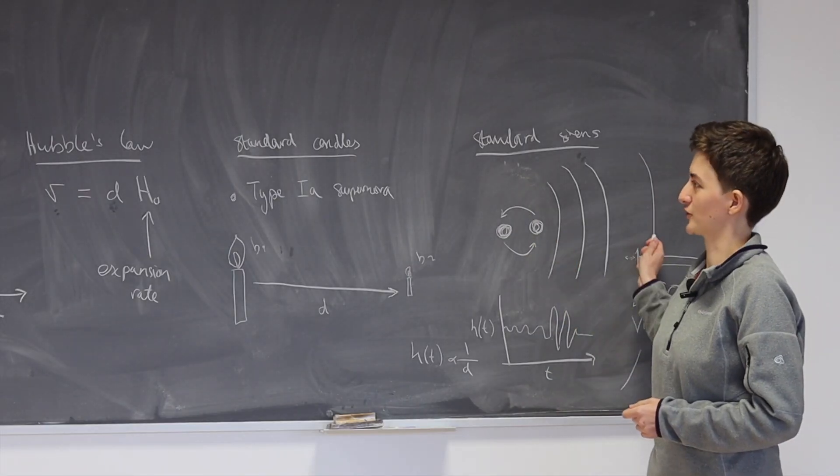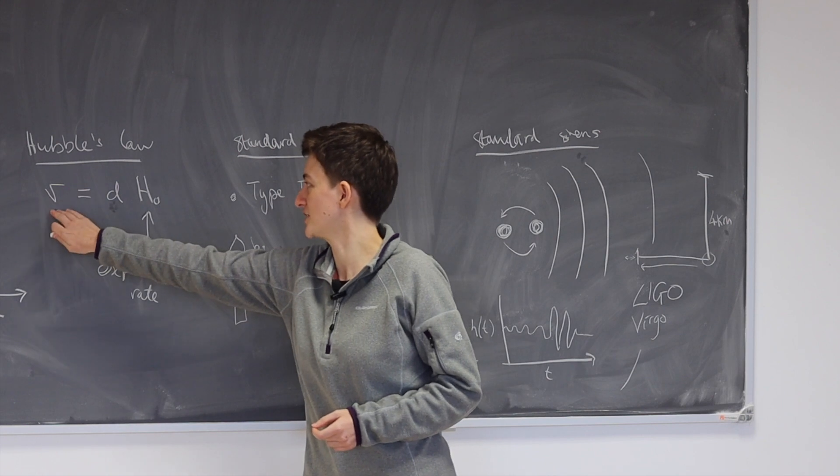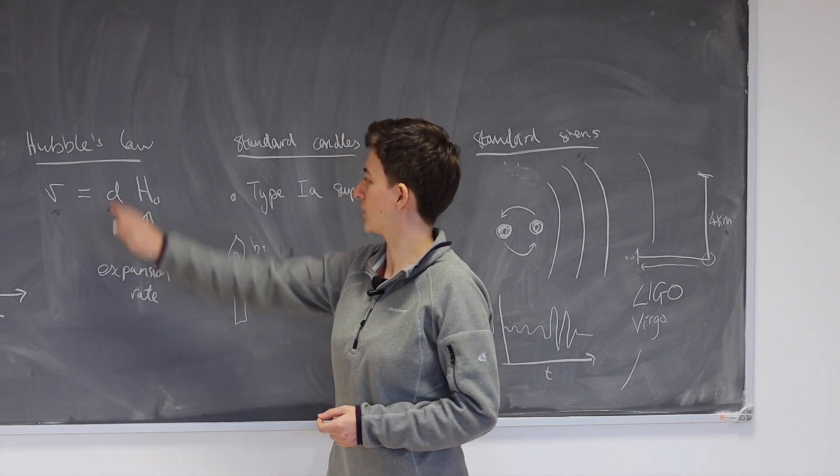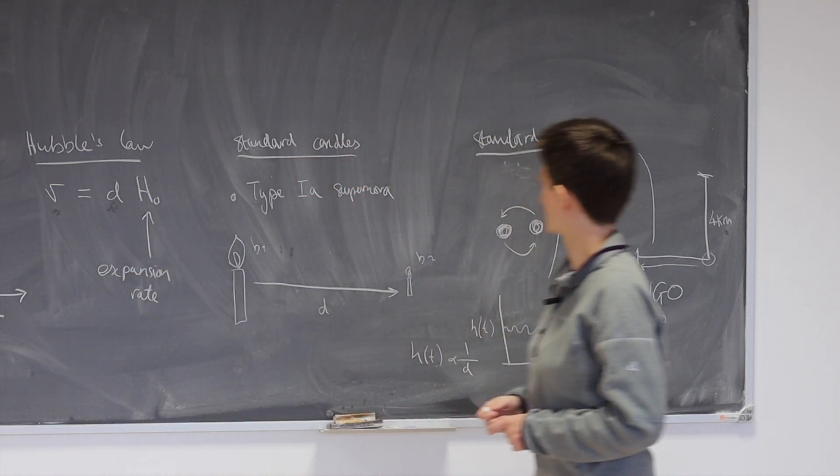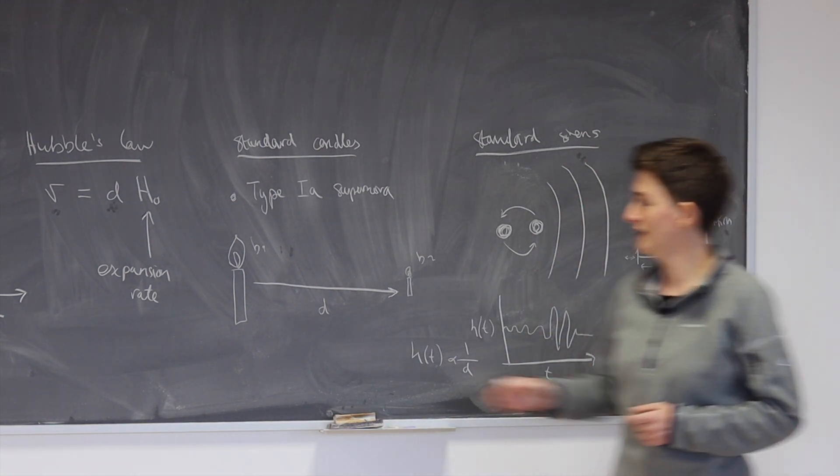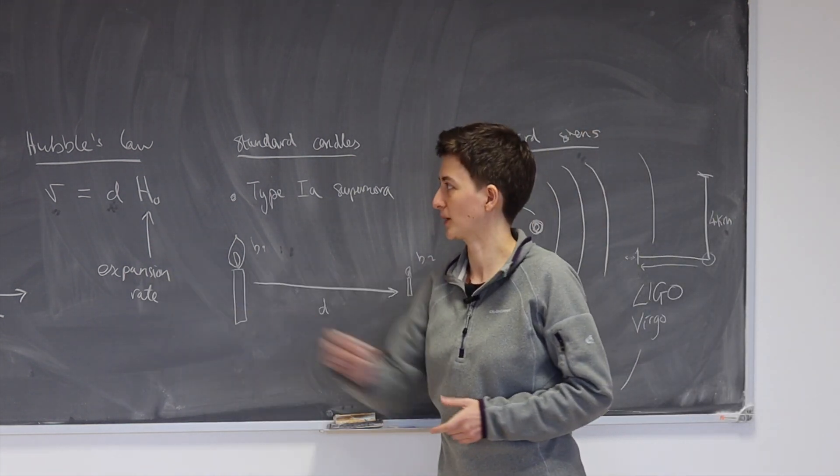So we have the light, we have the gravitational waves, so we have the redshift, we have the distance, and consequently we can measure H0 from these standard sirens, which as I said is the aim of the game, to measure this expansion rate.